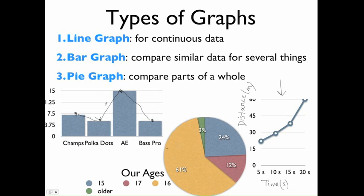Like, what is this? Halfway between American Eagle and Polka Dots. That's nothing. So it doesn't make sense to put this data as a line graph.